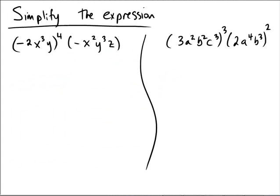We're going to bring together a whole bunch of different exponent rules in these particular problems — power of a power rules, product rules, and then just multiplication. The first example on the left: we have negative 2x cubed y to the fourth power, multiplied by negative x squared y cubed z.